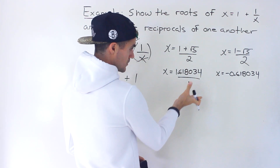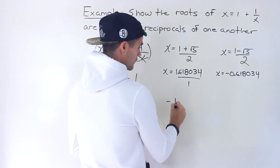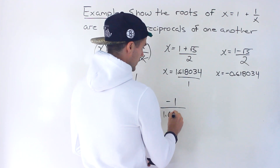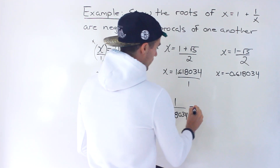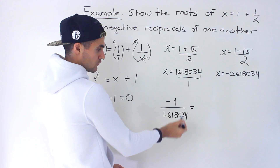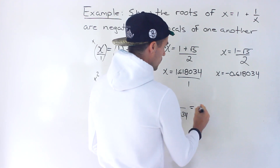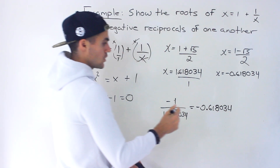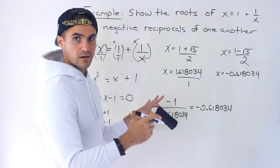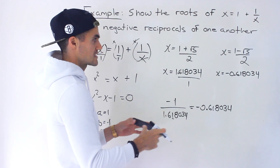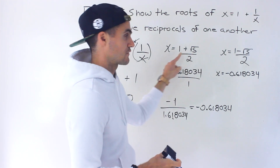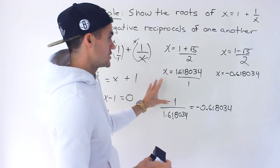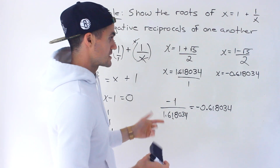Now we need to show these are negative reciprocals of one another. Take the first root — it's like over 1. The negative reciprocal would be negative 1 over 1.618034. When you do this in your calculator, you actually end up with the other value. That's one way to show both roots are negative reciprocals of one another when dealing with decimals.